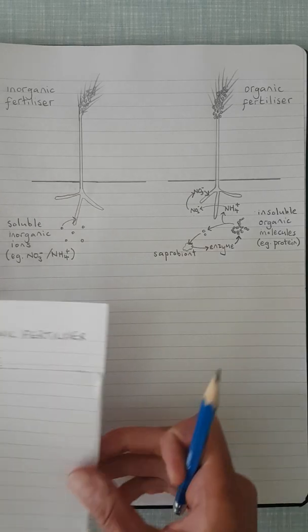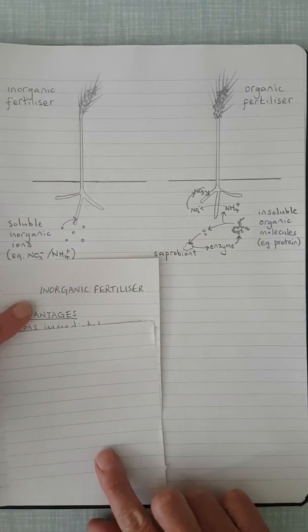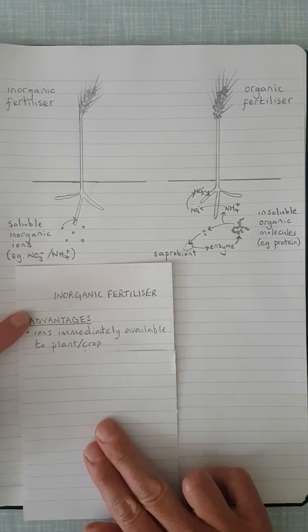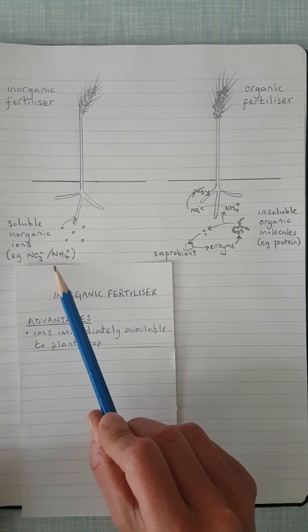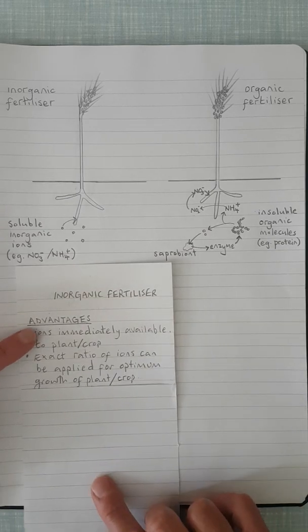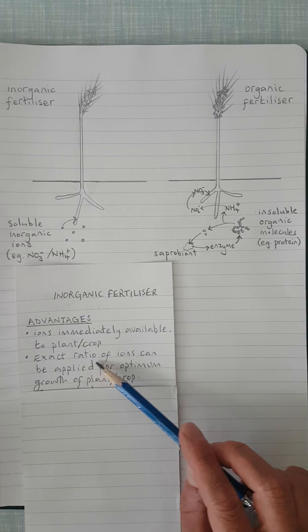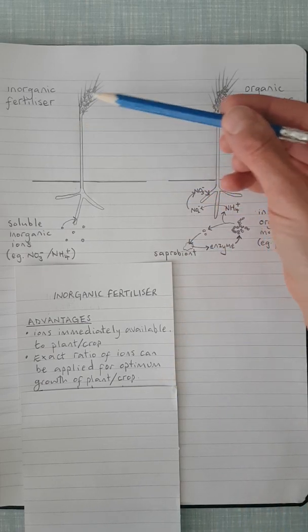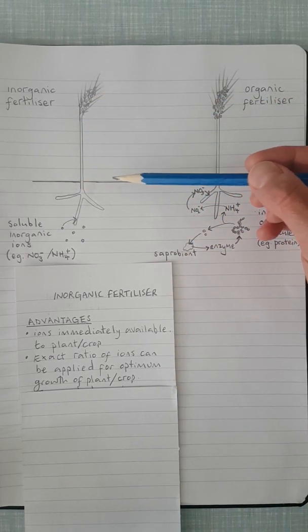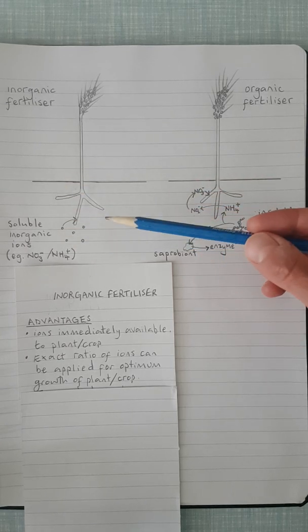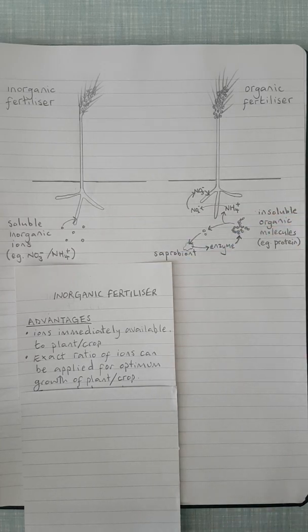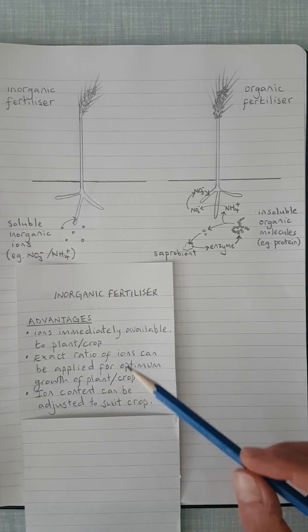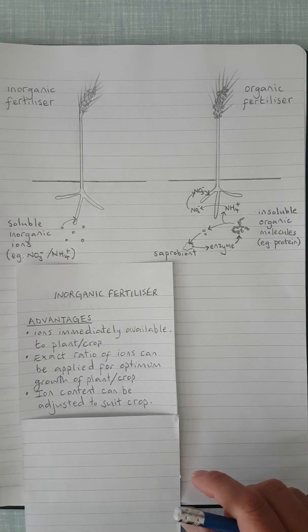Let's think about some advantages of using inorganic fertilizers first of all. Clearly looking at the picture, there's one clear advantage and that is that the ions are immediately available to the crop plant. It's possible to know the exact ratio of ions that can be applied. So if you know exactly what ratio of ions your crop plant needs, you can be certain that you're putting exactly that ratio of ions onto the soil when you're applying the inorganic fertilizer. And you can also adjust the ion content to suit your crop.